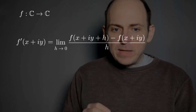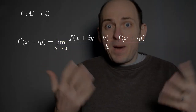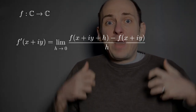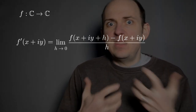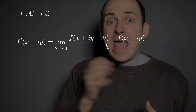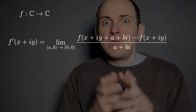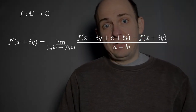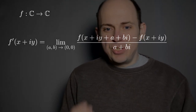Now this is a limit as a complex number approaches zero. So I can continue this idea of separating out the real and imaginary parts by rephrasing this limit as h approaches zero as a limit in the multivariable calculus sense. I'll replace h by a plus bi, and then I'll take this limit as h goes to zero and replace it with the limit as (a, b) approaches (0, 0).